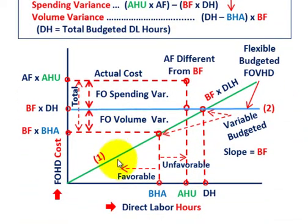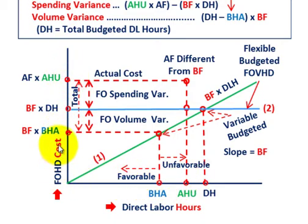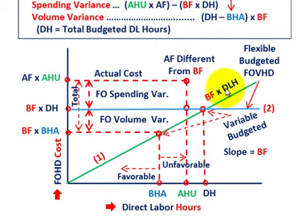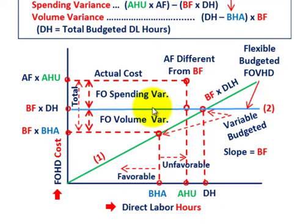Now let's go down to our graph and look at how we have that laid out. Along our x-axis or bottom axis we have direct labor hours, and along our y-axis we have our fixed overhead costs. We have two different lines: the green line is the budgeted fixed overhead rate times those direct labor hours — that's our variable amount. The blue line is just the fixed overhead rate itself, constant all the way across, which represents that flexible budgeted amount — the budgeted fixed rate times those denominator hours.